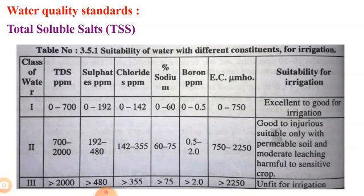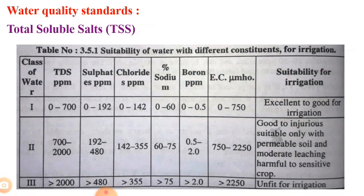The important indices of water quality parameters are: total soluble salts (TSS), sodium absorption ratio (SAR), exchangeable sodium percentage (ESP), residual sodium carbonate (RSC), and salinity classes for irrigation water. These are the important indices used to evaluate water quality parameters.